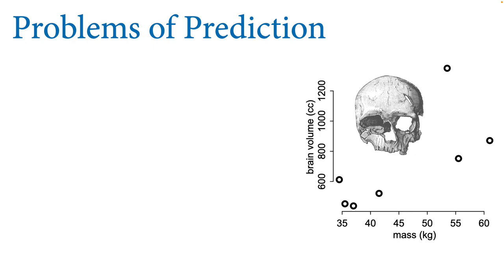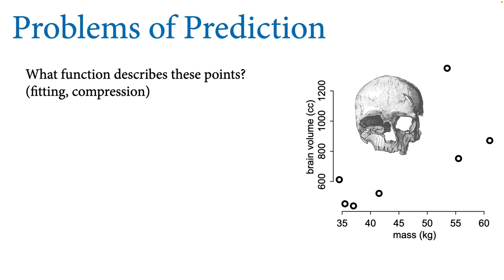Let me give a simple data analysis example. I want to talk about different things we might mean by prediction. I'll work with an example of just a few data points — one through seven — each being some hominin body mass against its brain volume. The point near the top is us humans: not the heaviest, but we have the largest brains, and there's a vague positive relationship among these points.